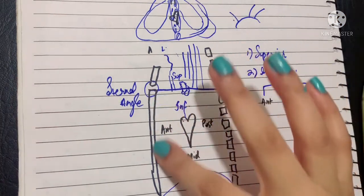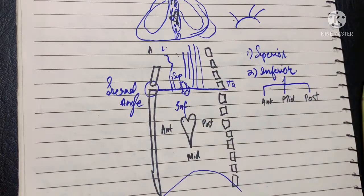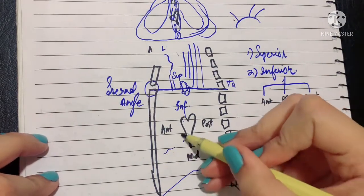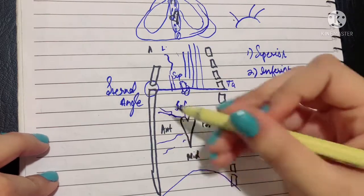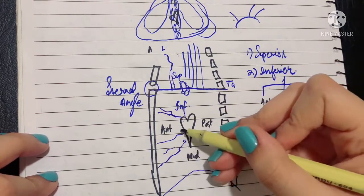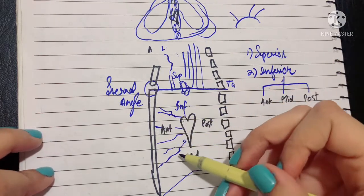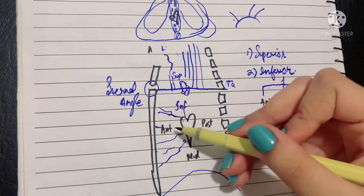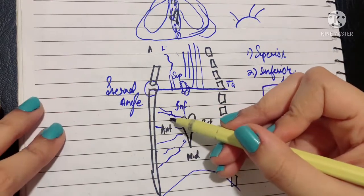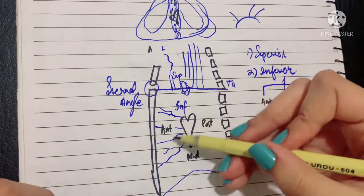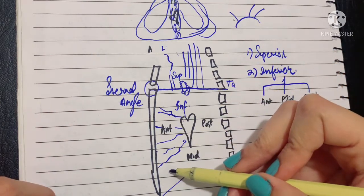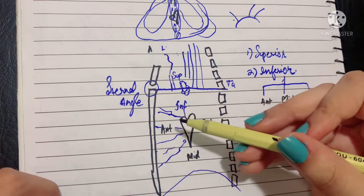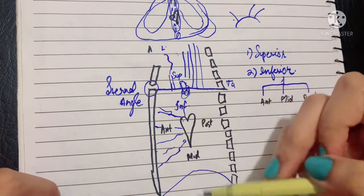The contents of the anterior mediastinum include the sternopericardial ligament, which connects the pericardium to the sternum. Other contents include mediastinal branches of the internal thoracic artery, some areolar tissue, lymphatics, and the lower part of the thymus.